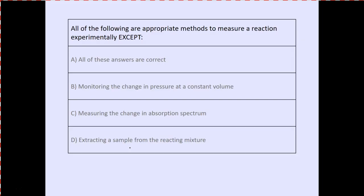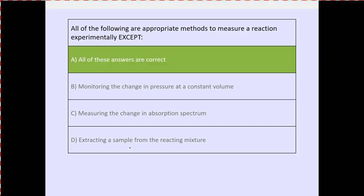All of the following are appropriate methods to measure a reaction experimentally: monitoring the change in pressure at constant volume, measuring the change in absorption spectrum, and extracting a sample from the reaction mixture. Technically, all of them would be valid experimental measurement methods.